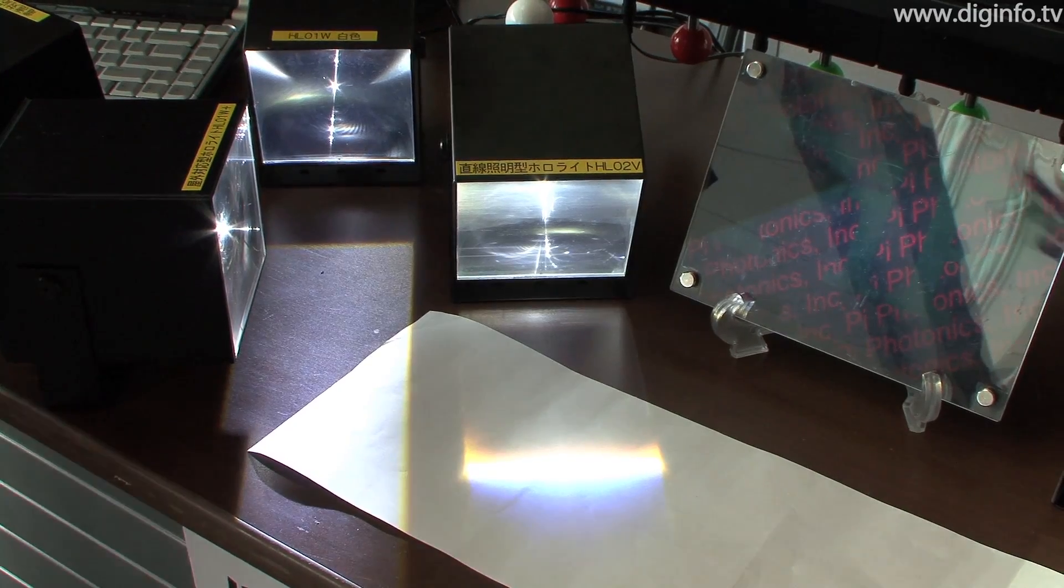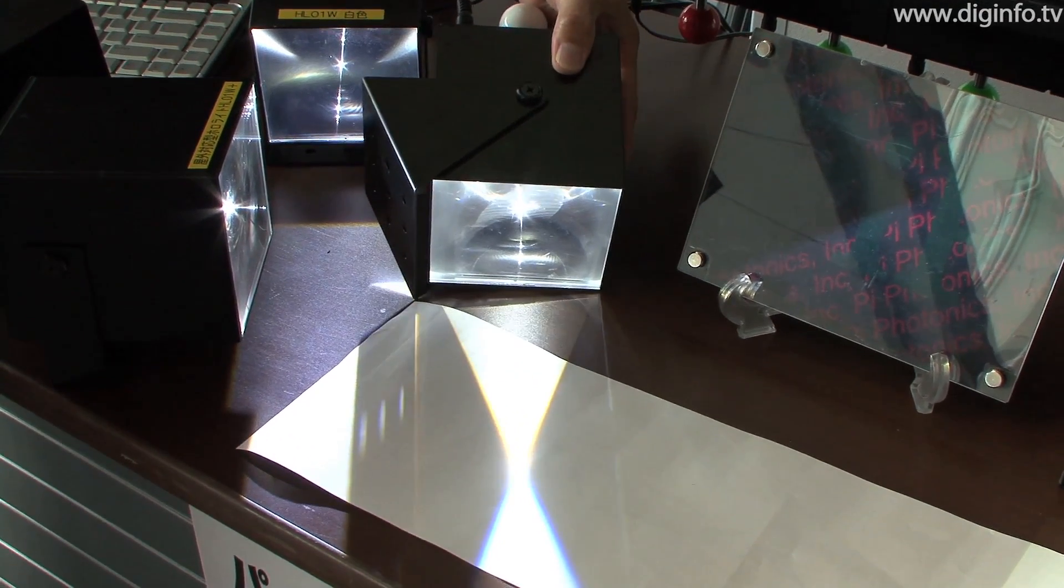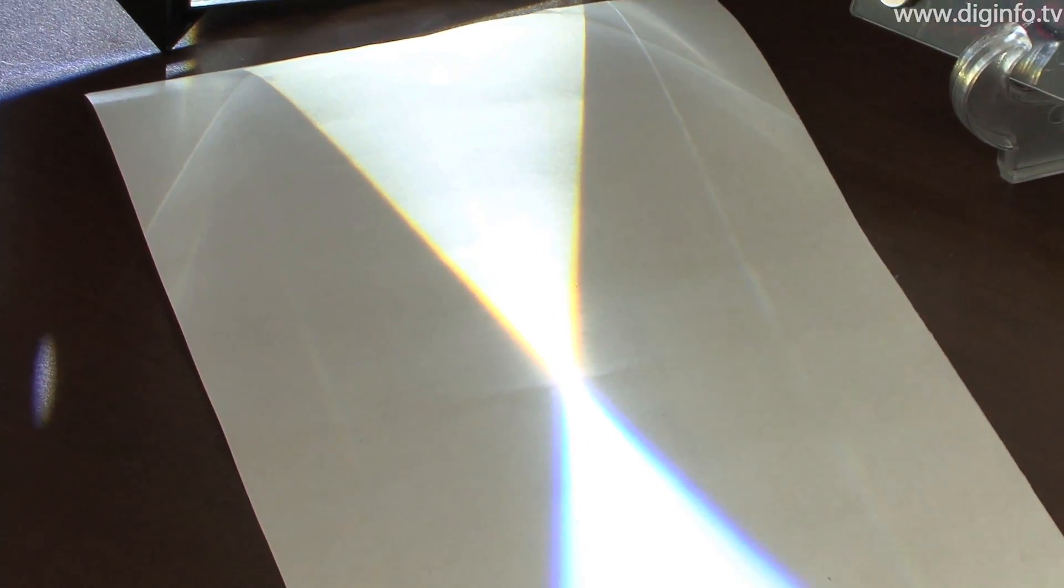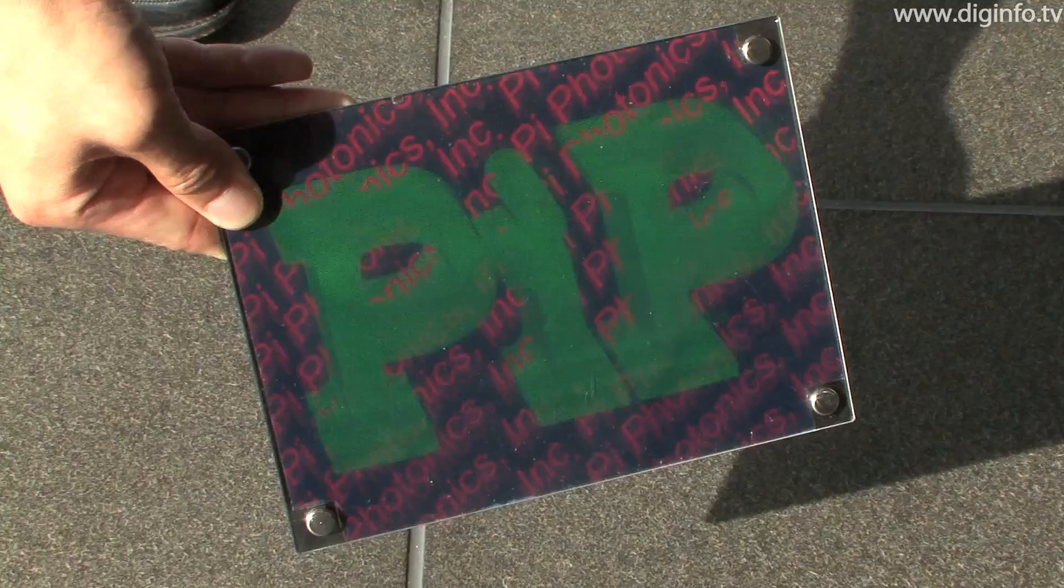The HoloLight has a large area, high brightness and high directionality. It also generates little heat and is easy on the eyes. These qualities make the HoloLight ideal for showing holograms.